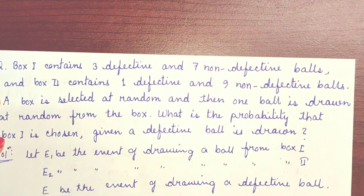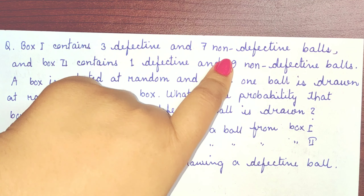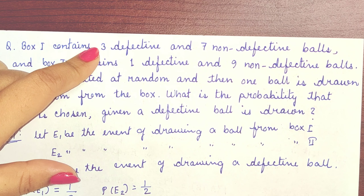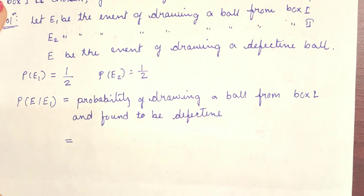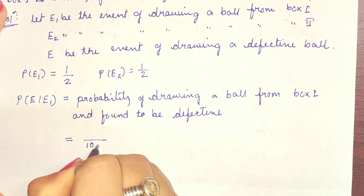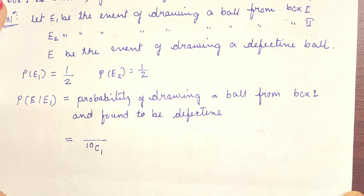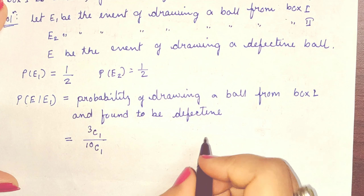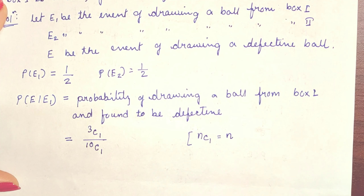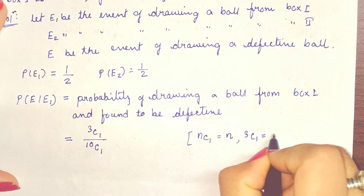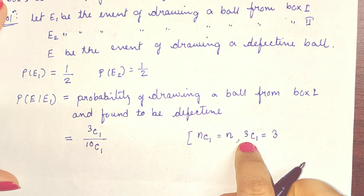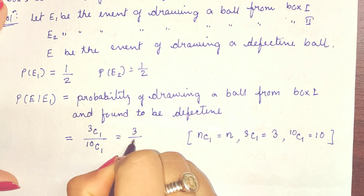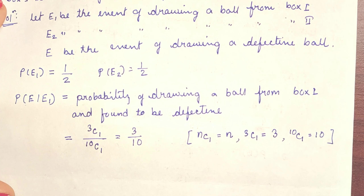Box 1 contains 3 defective balls and 7 non-defective balls, so total number of balls equals 3 plus 7 equals 10, and number of defective balls equals 3. Out of 10 balls we have to draw 1, so total cases = 10C1 and favorable cases = 3C1. Since NC1 = N, we get 3C1 = 3 and 10C1 = 10. Therefore P(E|E1) = 3/10.